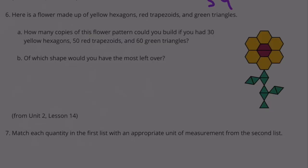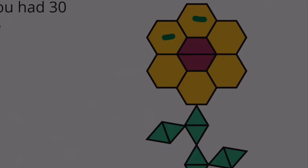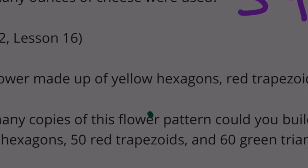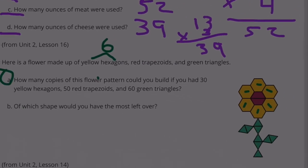Number 6: Here is a flower made up of yellow hexagons, red trapezoids, and green triangles. Part A: How many copies of this flower pattern could you build if you had 30 yellow hexagons, 50 red trapezoids, and 60 green triangles? So let's count: 1, 2, 3, 4, 5, 6. So we need 6 of these yellow hexagons to make 1 flower.